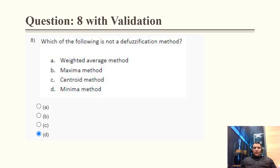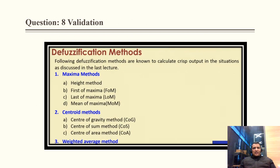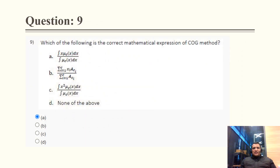Question 8: Which of the following is NOT a defuzzification method? Weighted average method, maximum method, and centroid method are all valid defuzzification methods. However, the minima method is NOT a defuzzification method. The correct answer is option D. Cross-validation confirms: maxima, centroid, and weighted average are defuzzification methods, but minimum method is not.